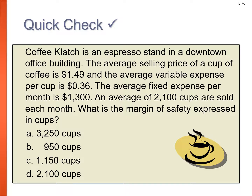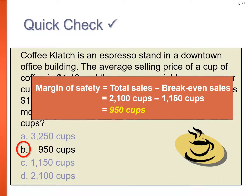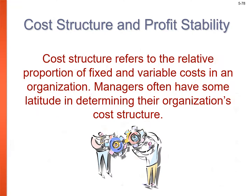For Coffee Clash, if they sell 2,100 cups and break-even is 1,150 cups, the margin of safety is 950 cups. That's how we express margin of safety in units.